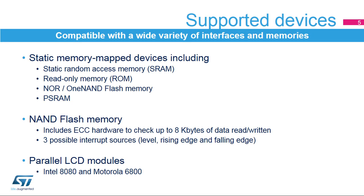Synchronous memory can be accessed at a maximum frequency of HCLK divided by 2. The FSMC controller supports a wide variety of devices and memories. It interfaces with static memory mapped including SRAM, ROM, NOR or NAND Flash memory, and PSRAM. The FSMC also interfaces with NAND Flash memories and supports error code correction or ECC for up to 8 kilobytes of data read or written.